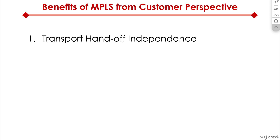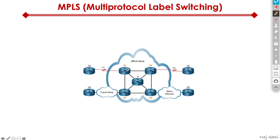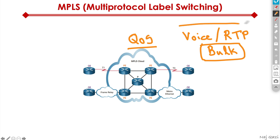A couple of benefits of MPLS: it's transport handoff independent, and it provides end-to-end QoS. The big thing about MPLS is that you get end-to-end quality of service. All the PEs and provider core routers have QoS configured on them, so they treat your voice and video, or real-time traffic, differently than your bulk traffic like internet or email. Your bulk traffic could be dropped, but your real-time voice and video cannot be dropped — it must have low latency. That's all built in to MPLS.